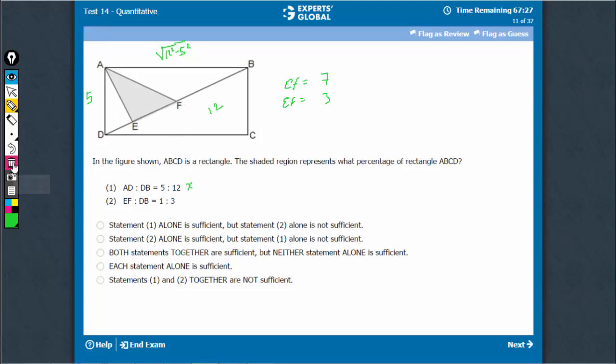Come to statement 2. Let's remove this. Statement 2 says EF to DB is 1 to 3.